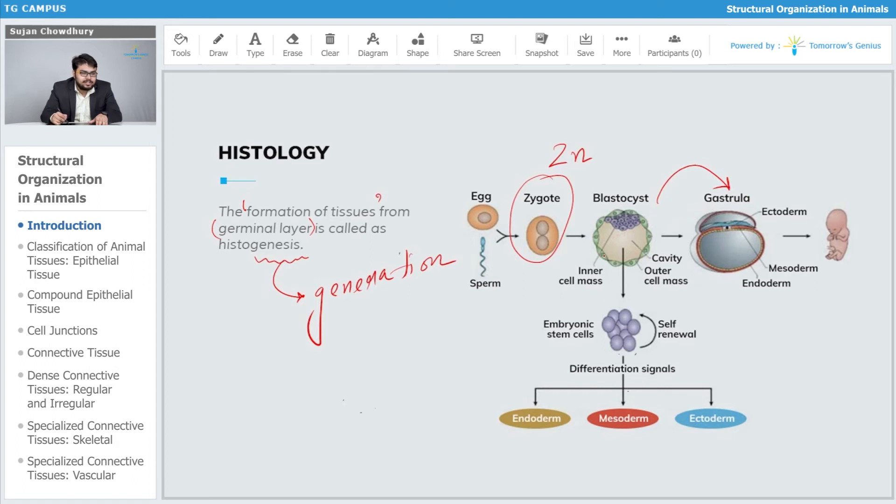The cells start getting organized into endoderm, the inner layer, ectoderm, the outer layer, and mesoderm, the middle layer.